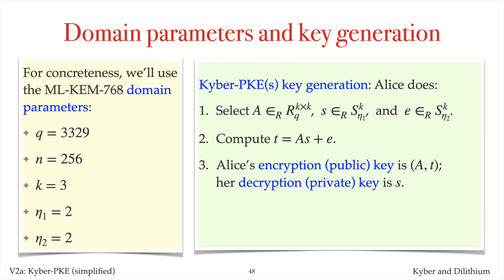Alice's encryption key, which is her public key, is A and t. Her decryption key, which is also her private key, is s. Note that computing the private key s from the public key At is an instance of the module learning-with-errors problem that was defined in V1B.